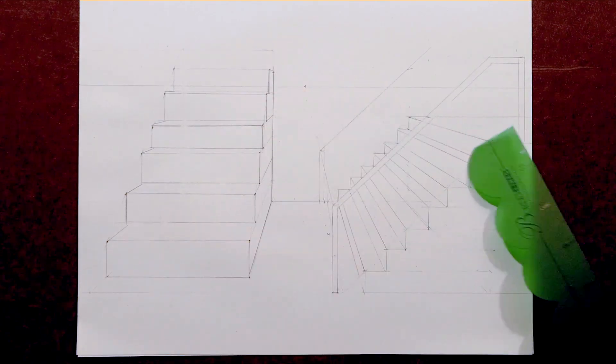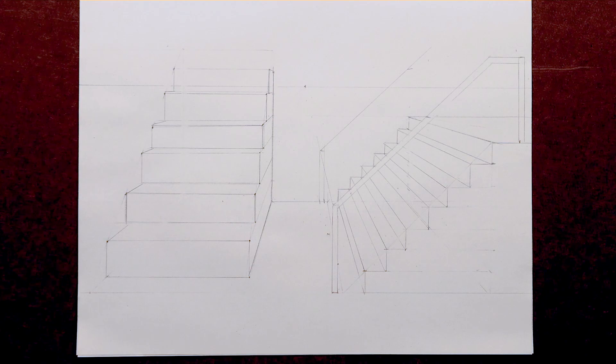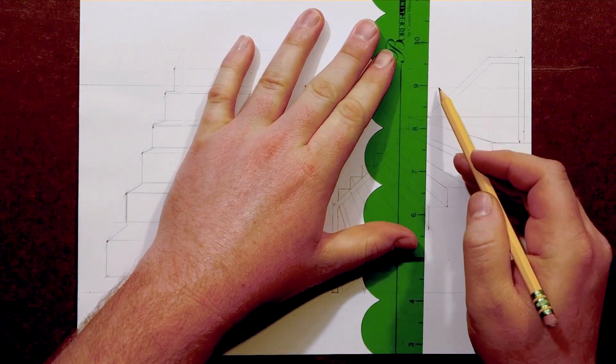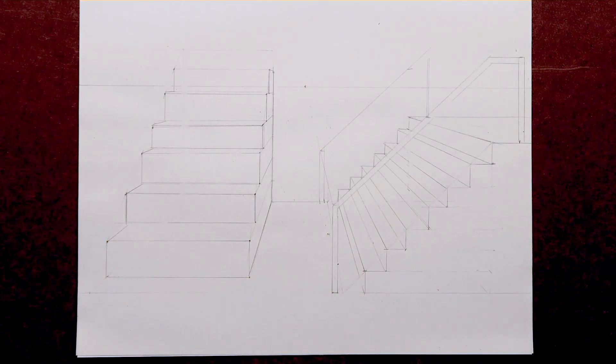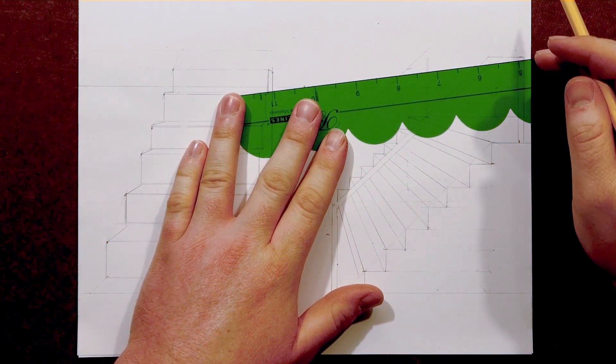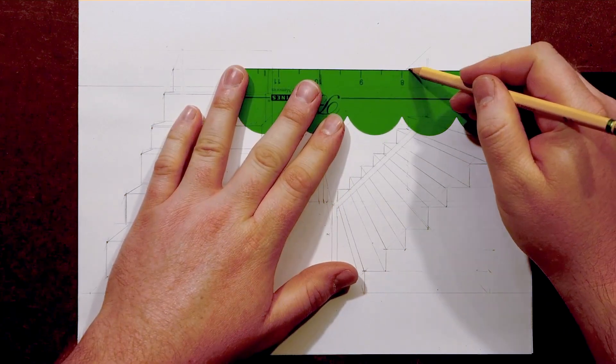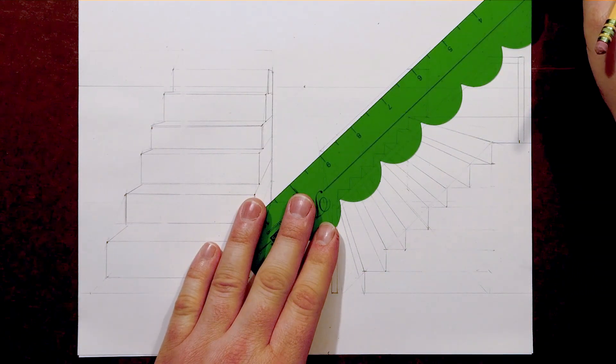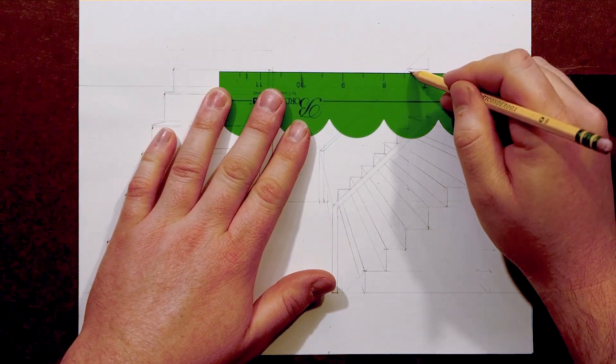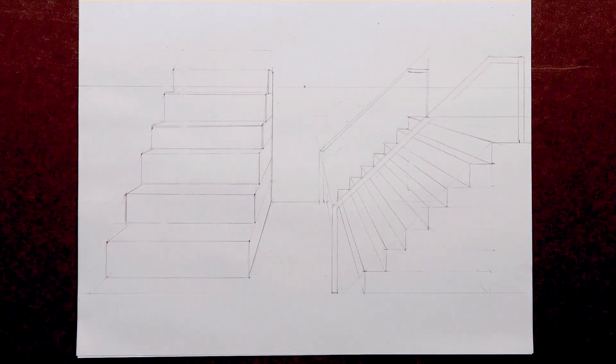If you've followed along this far, you've noticed a pattern. We're using those three types of lines to constantly transfer measurements and to push things back in space or bring them forward to us. But by using this system, you'll be able to nail down very complex and very convincing illusions if you just stick with those three lines: vertical, horizontal and converging lines.